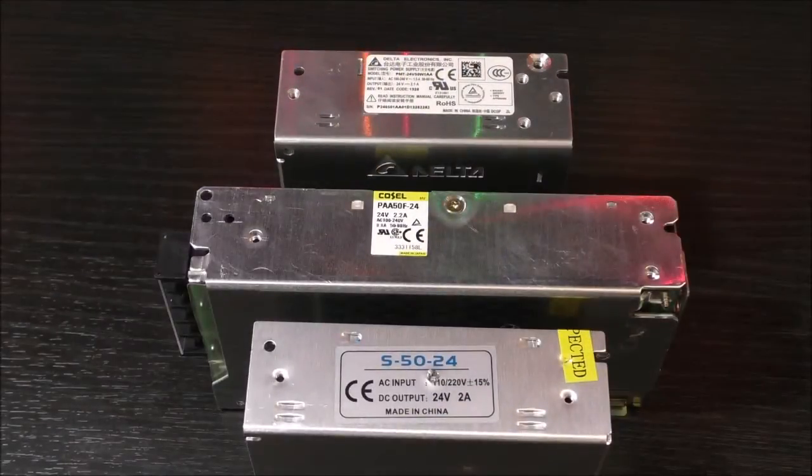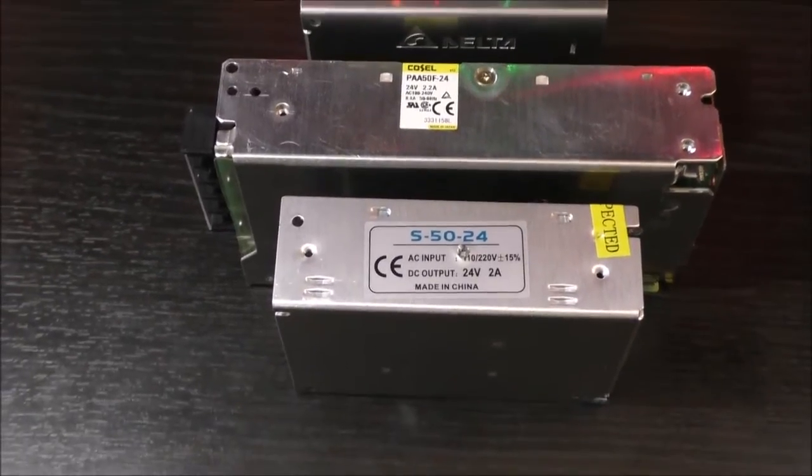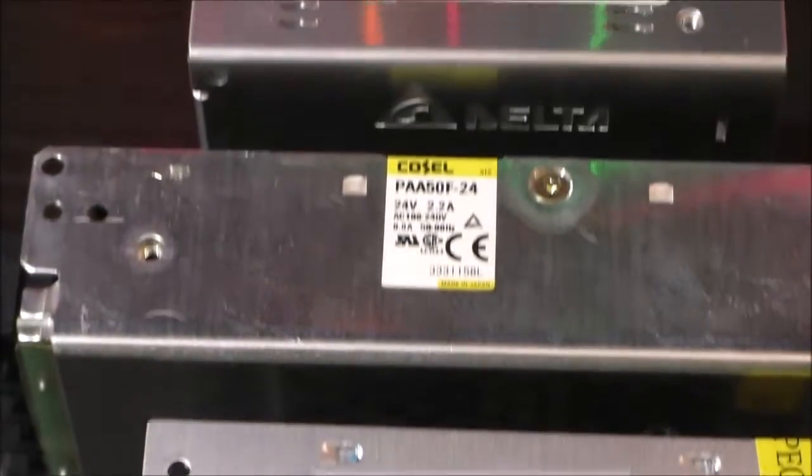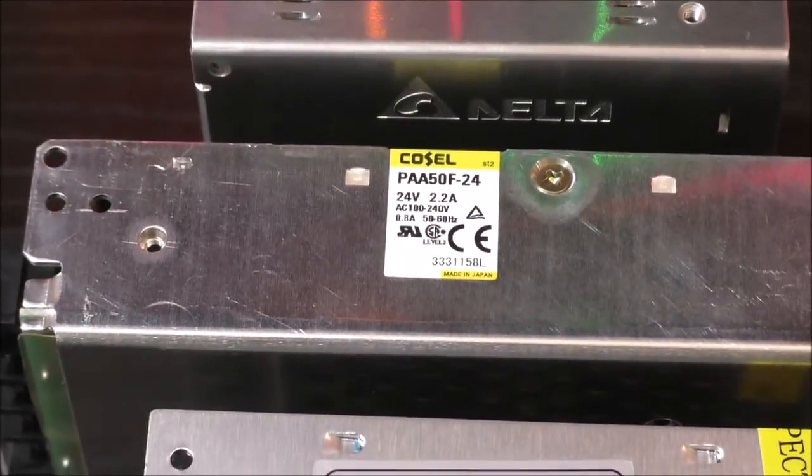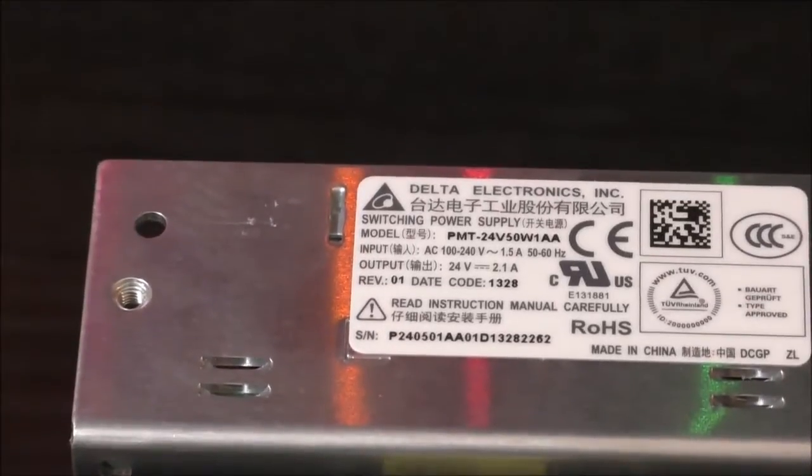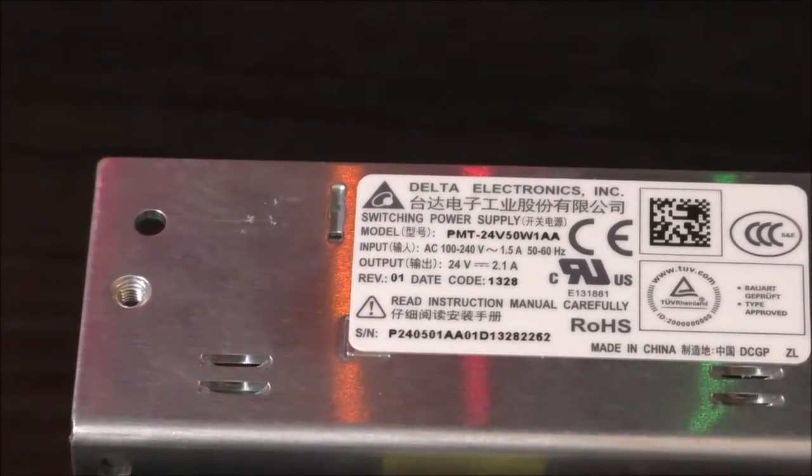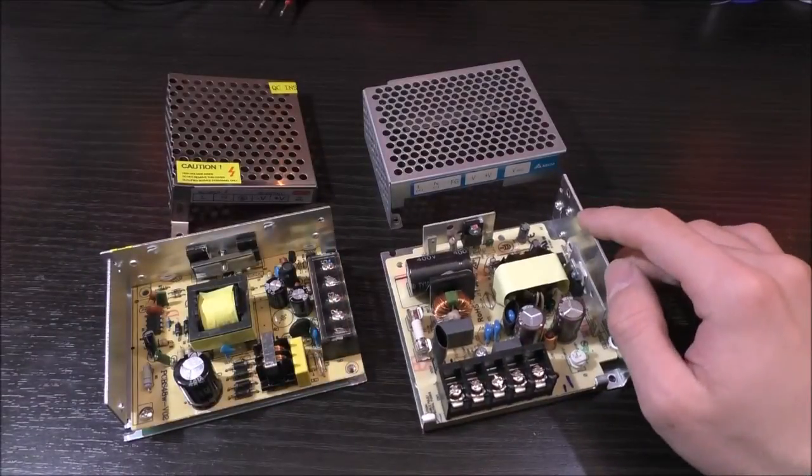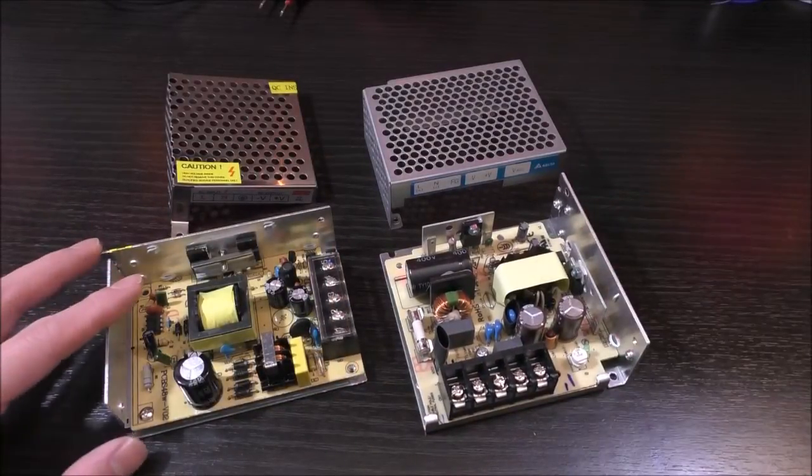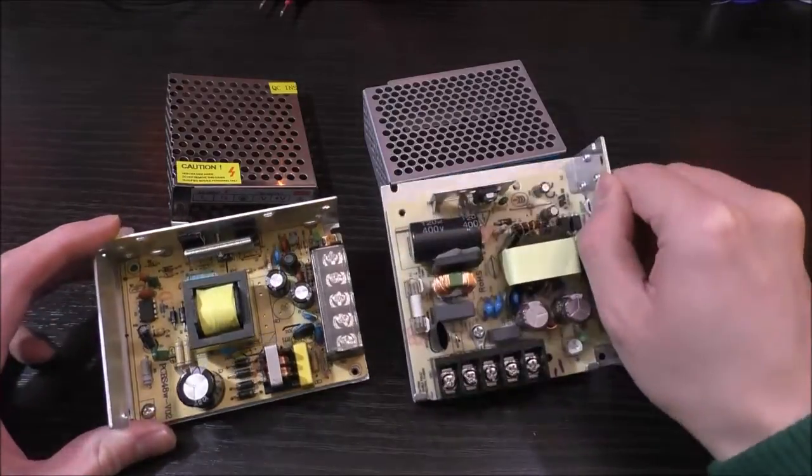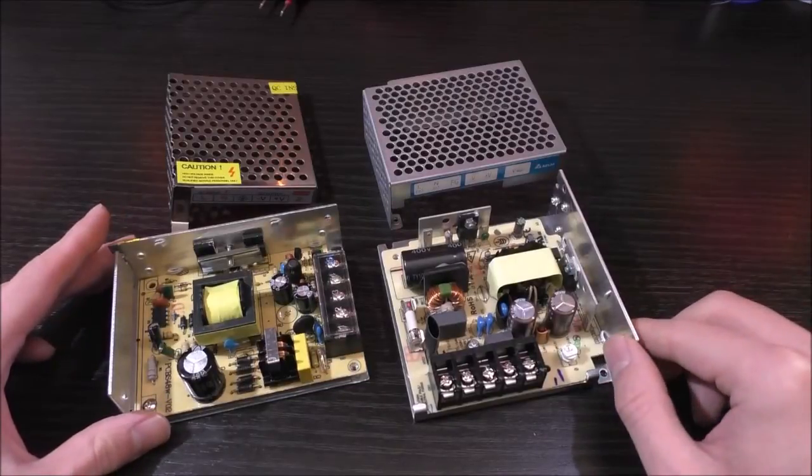So a quick look at the labels of the different power supplies. Over here we have the Chinese power supply, this one's the CoSel, and finally we have the Delta Electronics PMT series power supply. Alright, so I've taken apart the Delta power supply and I've also taken apart the Chinese power supply just to give you a good idea and to have a comparison between these two given their relatively close price points.